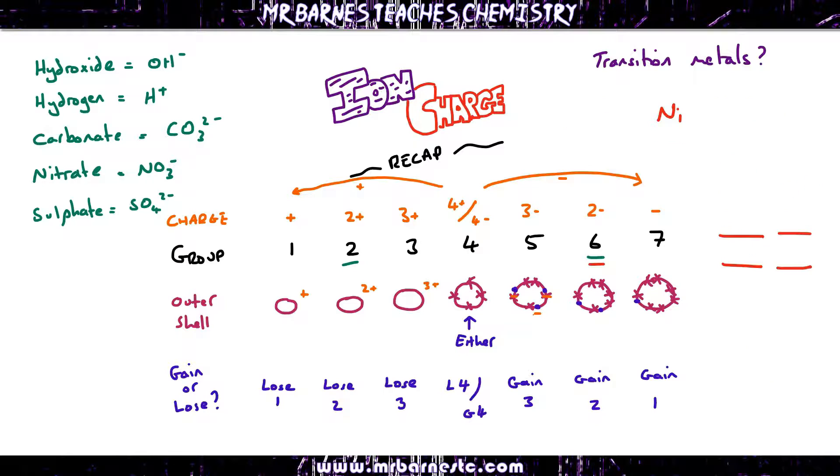If I look at another example, nickel chloride. Chlorine's in group 7, therefore I know my charge is -1. I've got 2 of them, therefore my total charge is 2-. Therefore my 1 nickel has got to be 2+. There's only 1 of them, so it's Ni 2+.